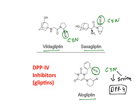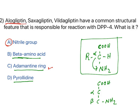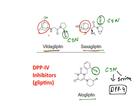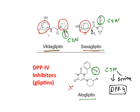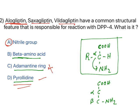Adamantane ring is present in vildagliptin and saxagliptin but not in alogliptin. Pyrrolidine ring is present in two drugs but not in alogliptin. The question requires a feature common to all three drugs, so adamantane and pyrrolidine are ruled out. The answer is the nitrile group. This is a combo question combining pharmacology and medicinal chemistry.